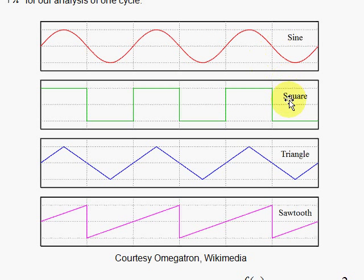We're going to use the convention that all of our periodic waves have wavelengths equal to 2π. So we have the sine, the square, the triangle, and the sawtooth or ramp.